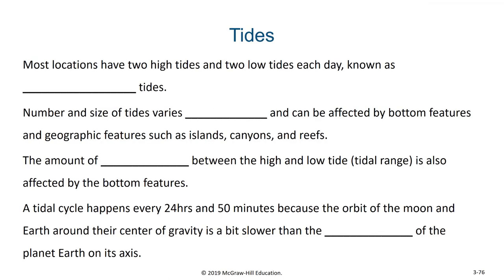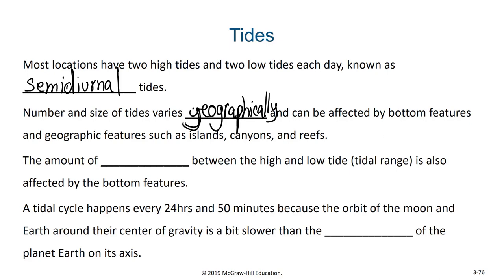Most locations on earth have two high tides and two low tides each day; this is known as semi-diurnal tides. The number and size of tides varies geographically and can be affected by bottom features and geographic features such as islands, canyons, and reefs. The amount of difference between high tide and low tide is known as the tidal range, and this can also be affected by bottom features in the surrounding area.